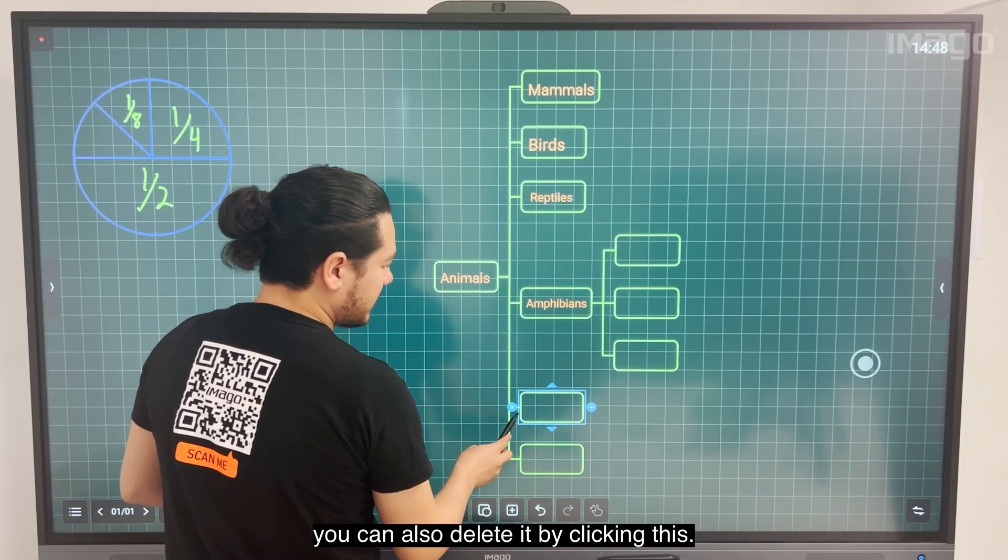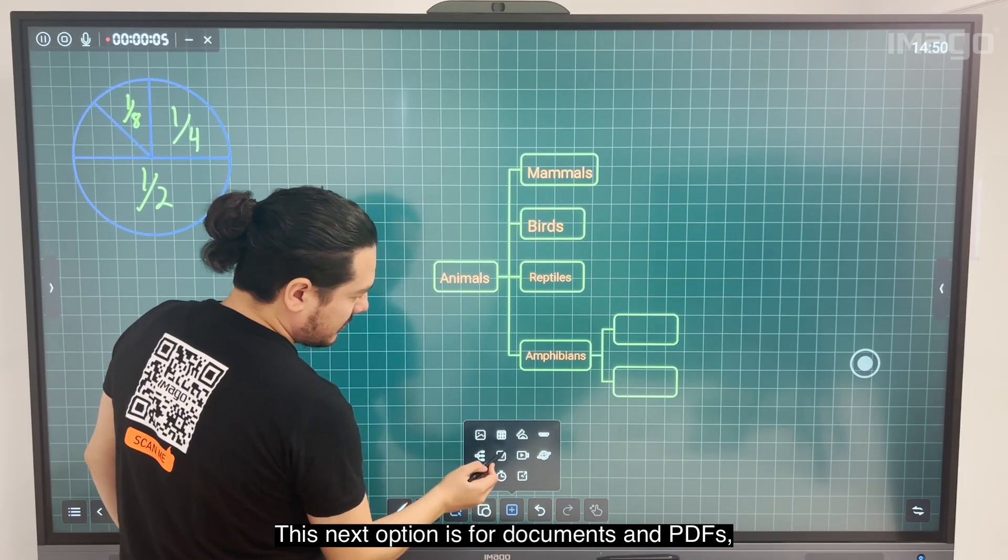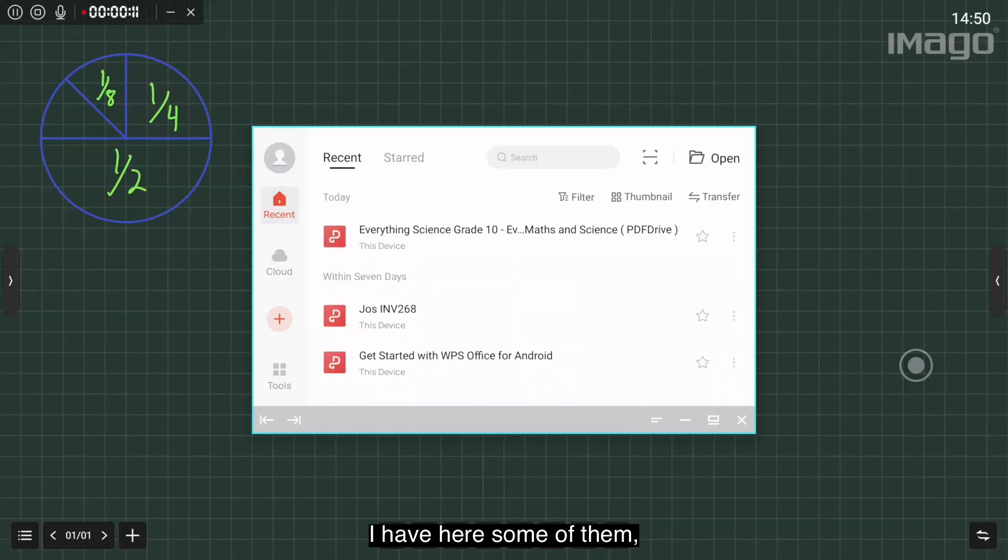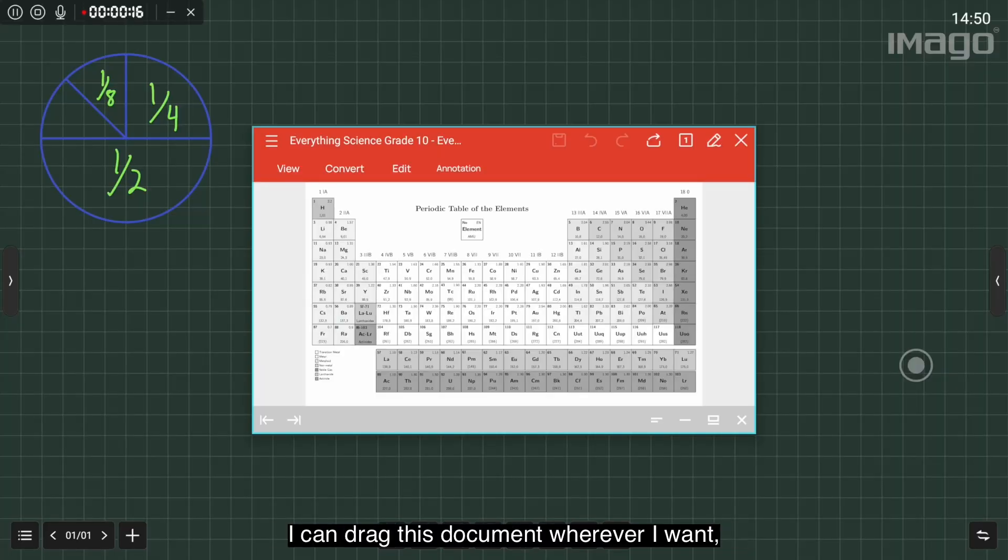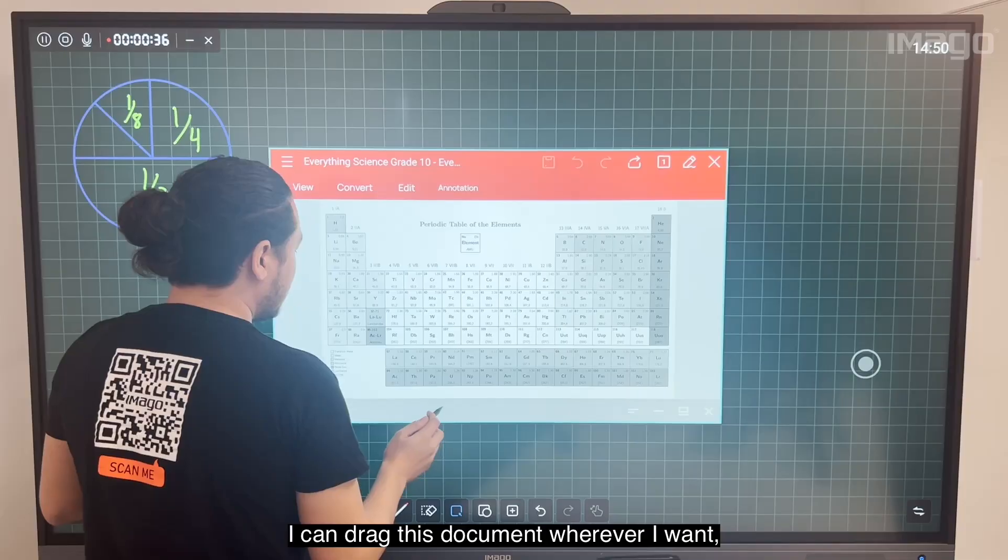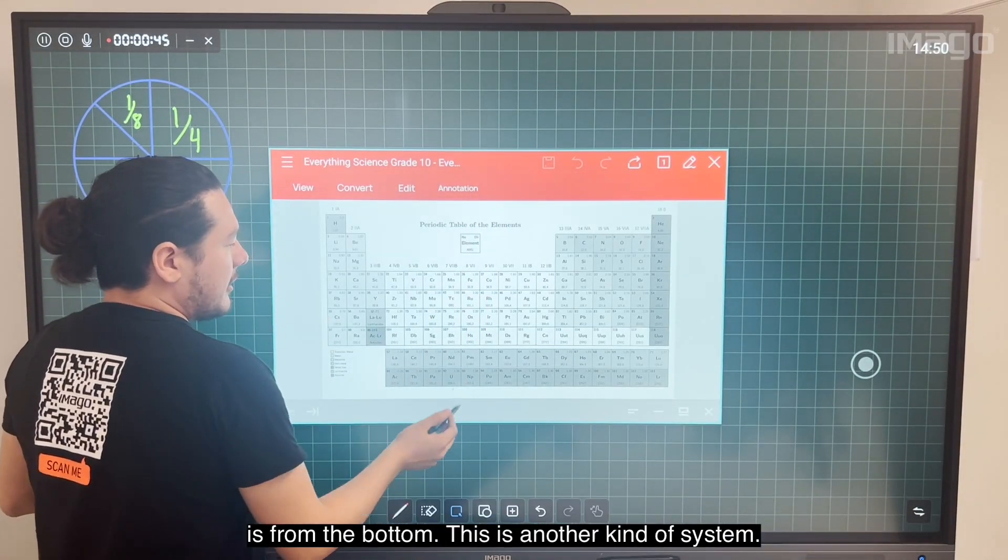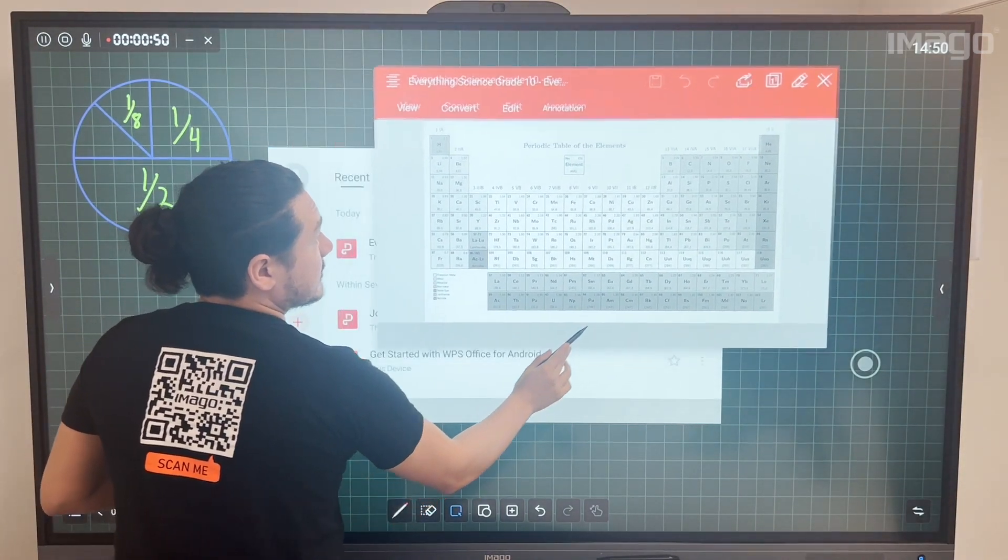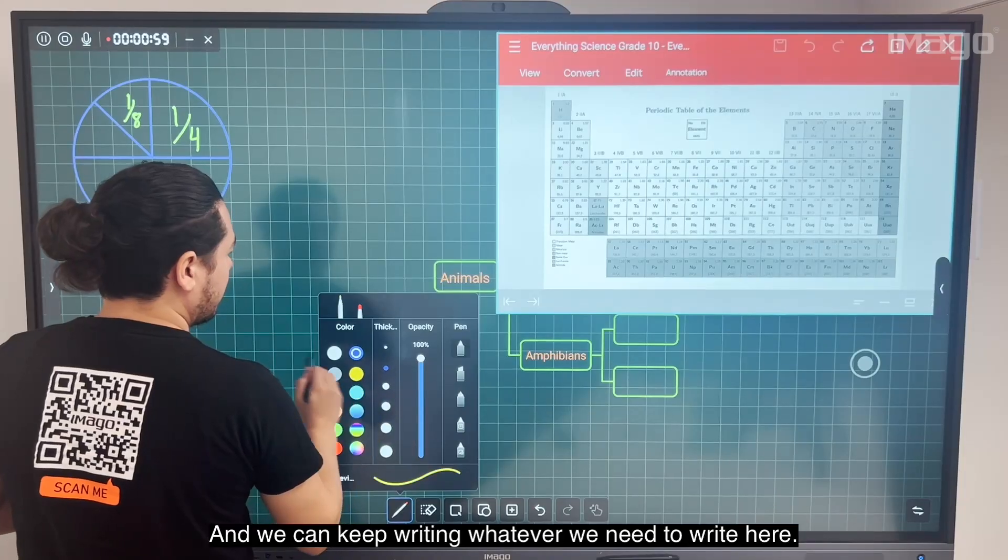Now this next option is for documents, PDFs. I have some of them here. I will choose one - I have this Periodic Table of the Elements. I can drag this document wherever I want. Just be aware that it's not from the top like Windows or Mac, it's from the bottom - this is another kind of system. We can keep writing whatever we need to write here.